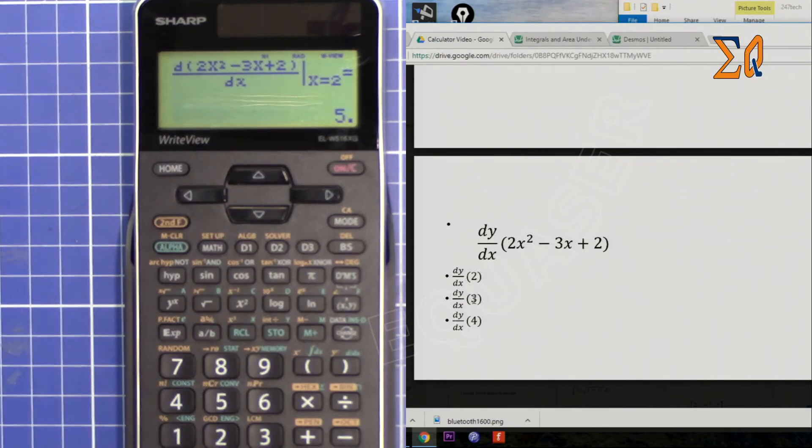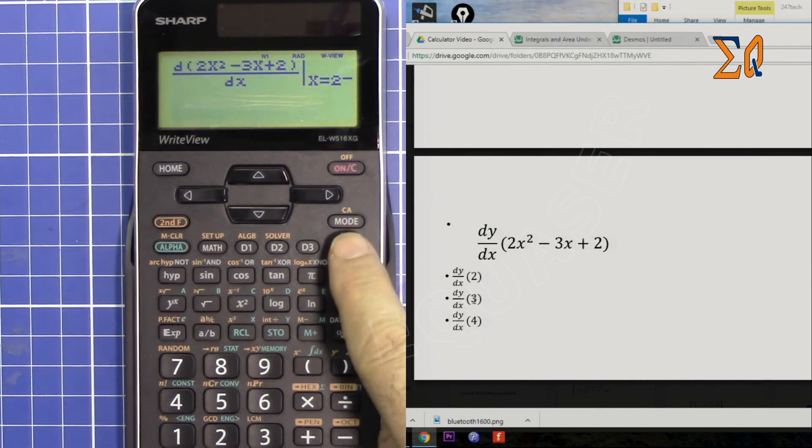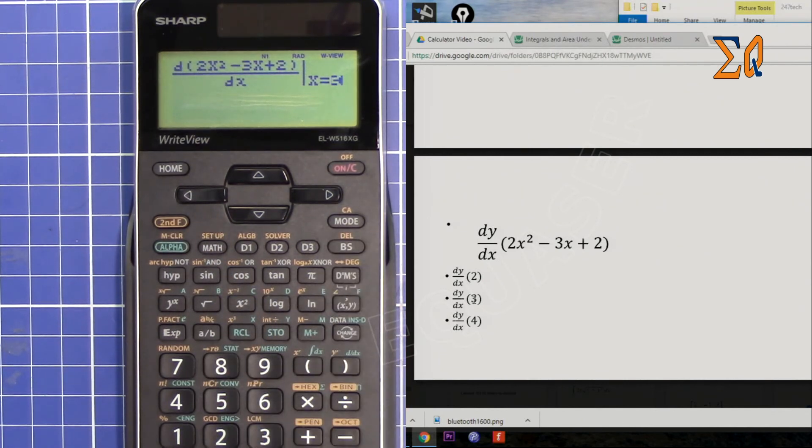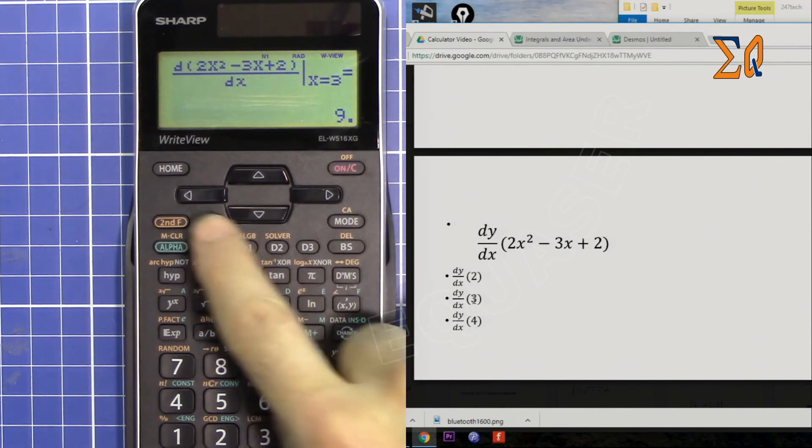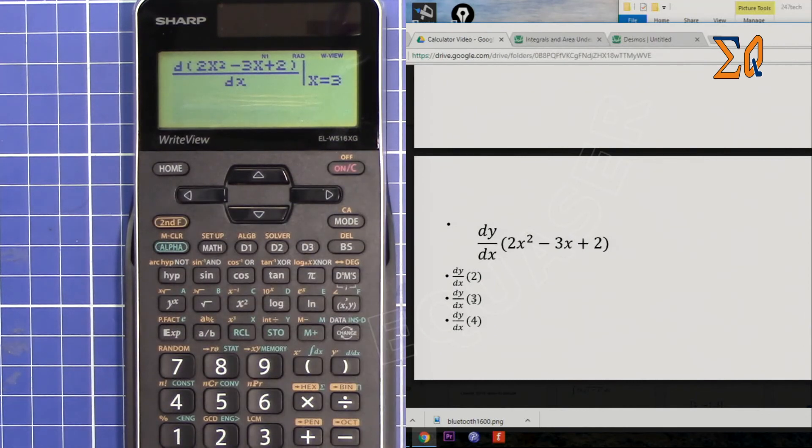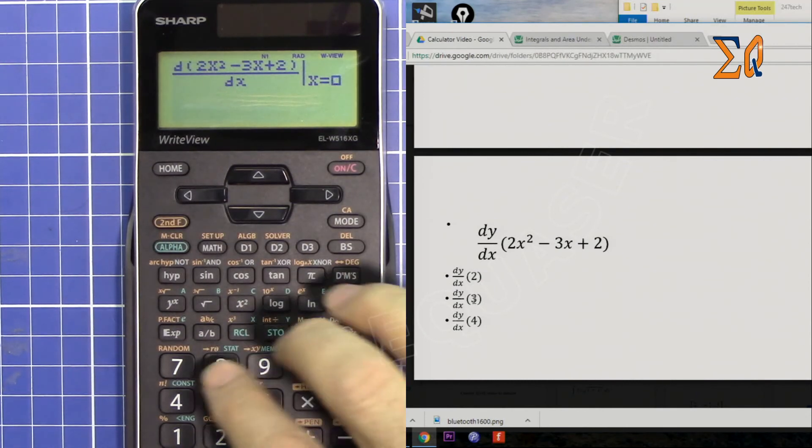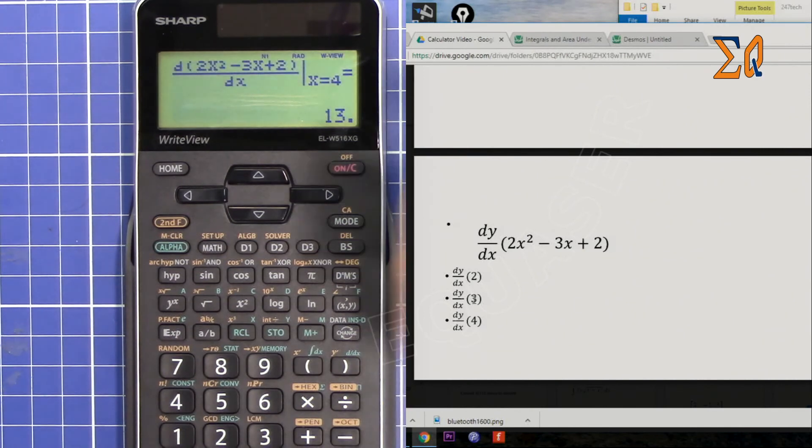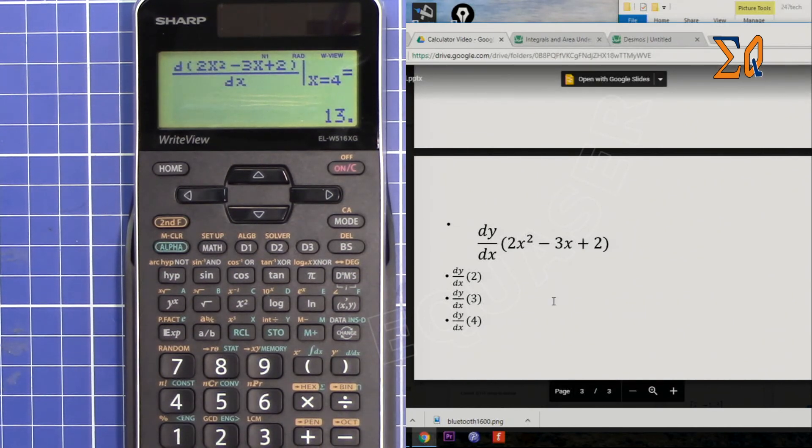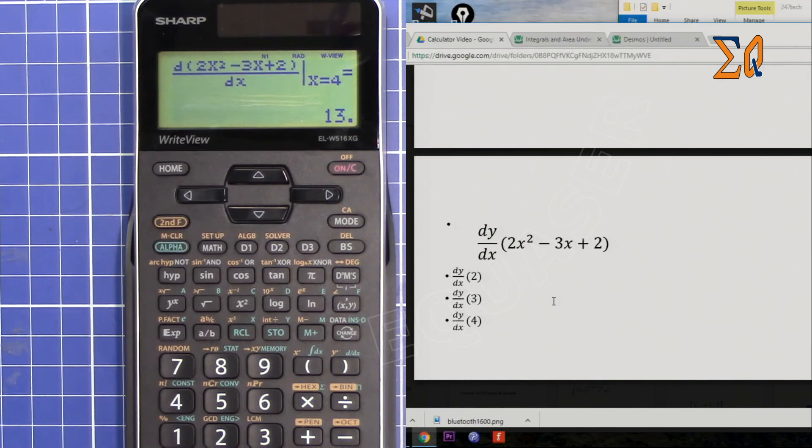If you want to evaluate it with 3, just go with the arrow to the back, press backspace, enter 3, and you get 9. Go back, backspace, and enter 4. This way you can have multiple values evaluated.